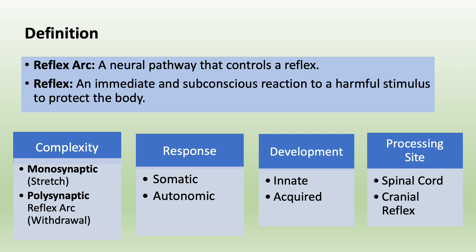Monosynaptic means there is only one synapse. Polysynaptic means there is more than one synapse in the reflex arc. For monosynaptic reflexes, a good example is deep tendon reflexes commonly used in practice, like the patellar reflex or knee jerk reflex. A polysynaptic reflex arc example is withdrawal reflexes — when you put your hand on a hot surface by accident, you immediately take your hand off through the polysynaptic withdrawal reflex arc. According to the response, reflexes are either somatic, associated with skeletal muscle, or autonomic, associated with internal organs.